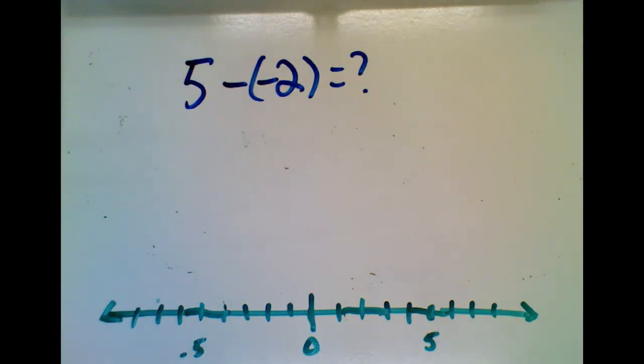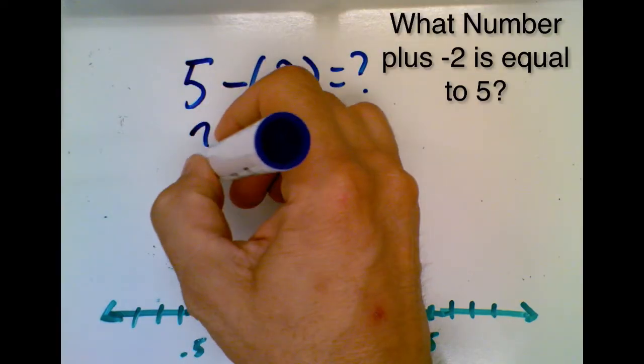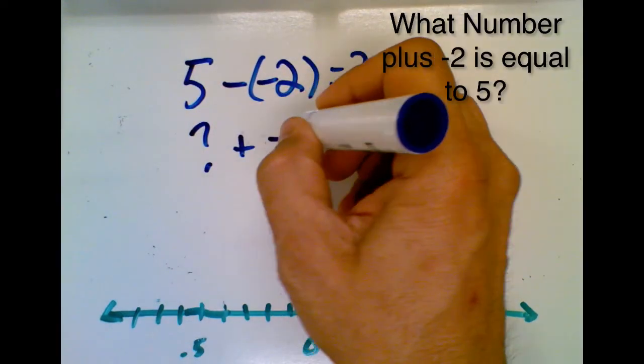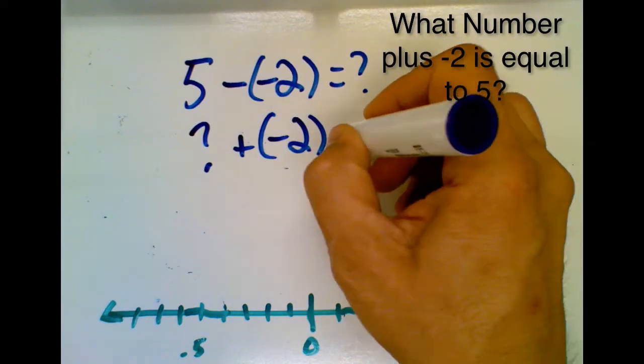Once again, we ask the question, what number plus negative 2 is equal to 5?